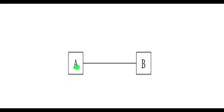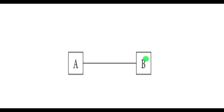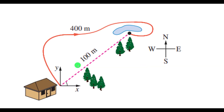When we represent displacement, we use a positive or negative sign depending on the direction of travel. Let us consider point A as the starting point. When the object moves from point A to point B, displacement is considered positive, and it is negative when it travels from point B to A.